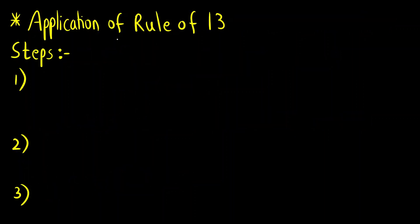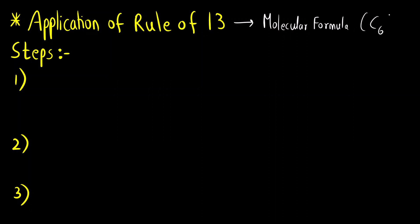First of all let us understand what is the application of rule of 13 and why it is used. It is used to find out the molecular formula. Molecular formula is the formula that gives information about the different number of atoms. For example, benzene has six carbons and six hydrogens — C6H6. So we have written the molecular formula that means it has six carbons and six hydrogens.